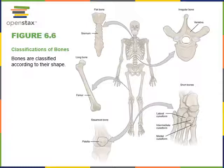In contrast, short bones are box-shaped. The carpals and tarsals, found in the carpal and tarsal regions respectively, are examples of short bones with a boxy shape.